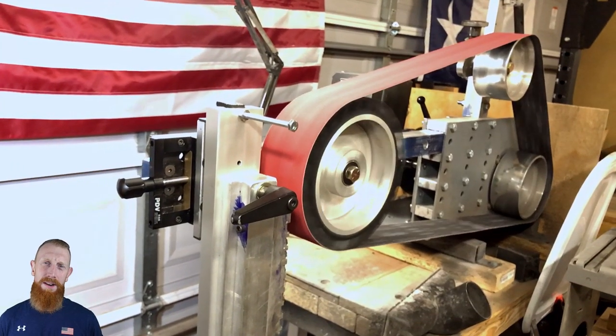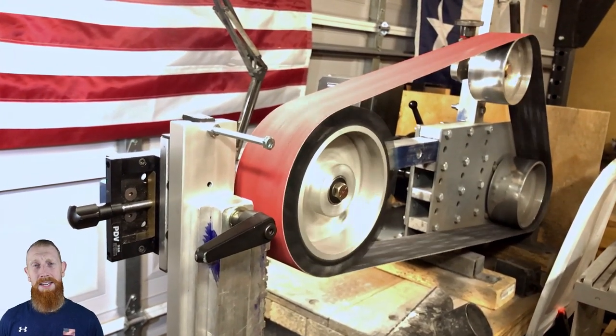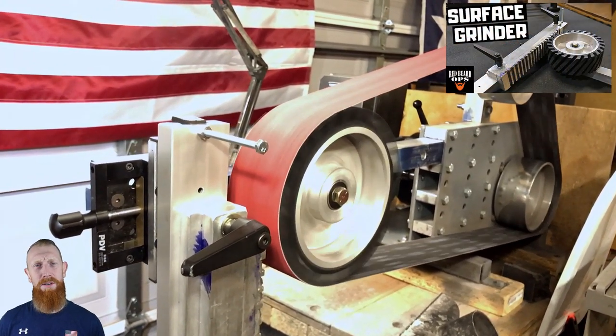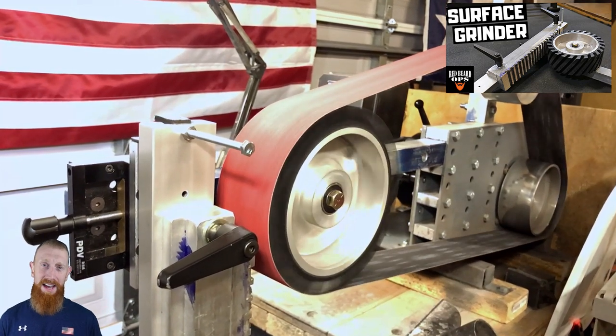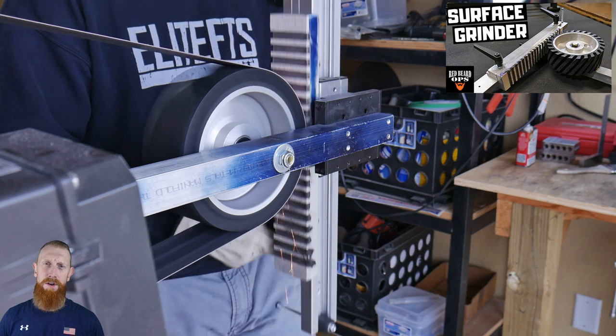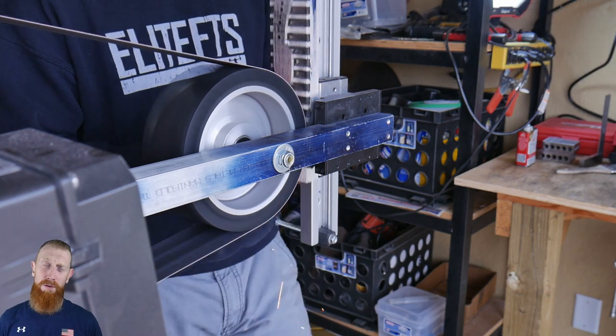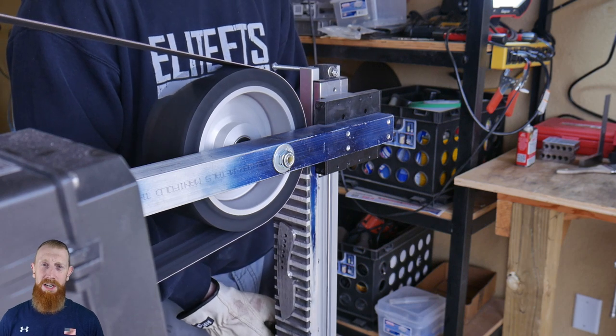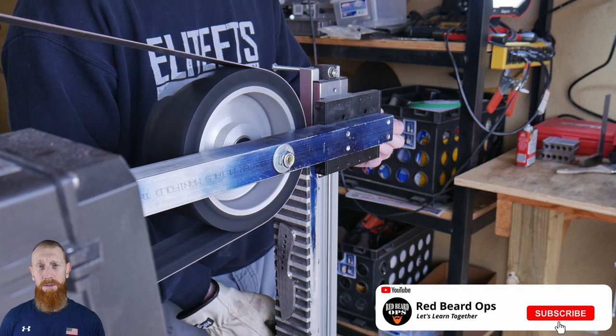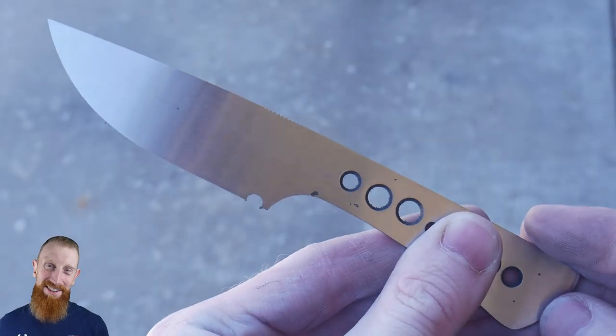Alright guys, so I recently put out a video on how to build a DIY surface grinding attachment for your 2x72 belt sander. If you haven't seen that, this video won't make sense, so click on the cards above to go to that video first. This video is going to be a review on how well this machine performs and also some tips and tricks on how to use it.